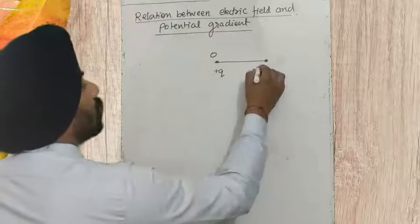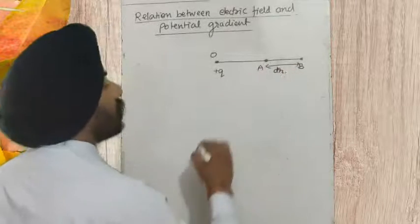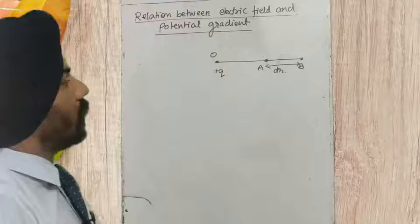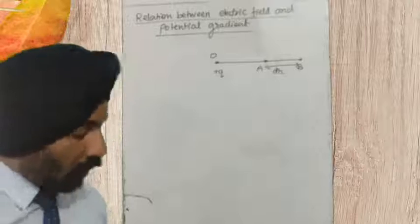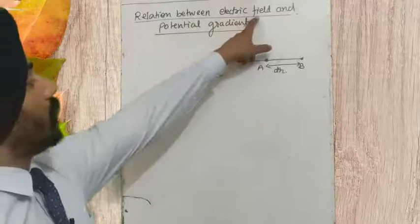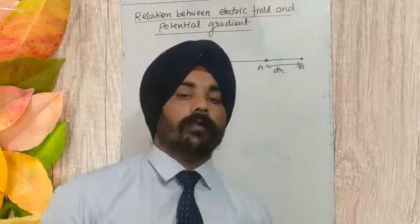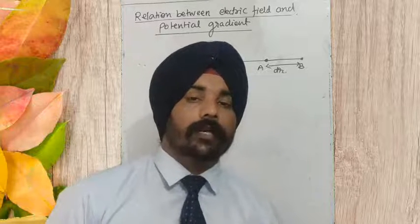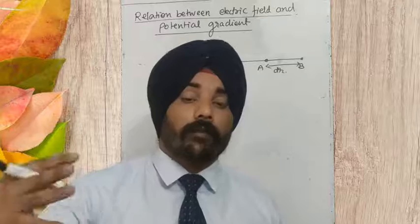We have point A and point B which are at a distance dr apart from each other. We are going to shift a charge q₀ from point B to point A. Because we are driving the relation between electric field and potential gradient, we need to know what is the potential at point A and point B, and what is the work done to shift this charge from one point to another.